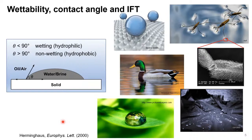We characterize wettability by contact angle. If you have a solid surface and put a droplet on top, the tangent it makes at the three-phase contact line gives you the contact angle. If it's less than 90 degrees we call it a wetting or hydrophilic surface; if it's more than 90 degrees it's called non-wetting or hydrophobic.